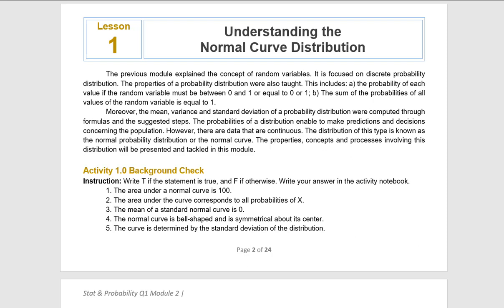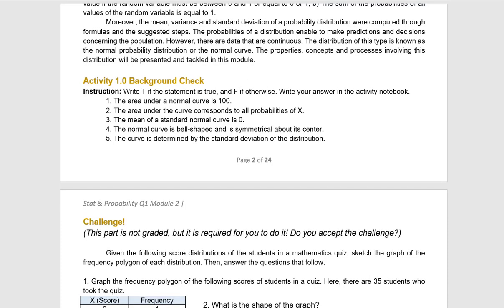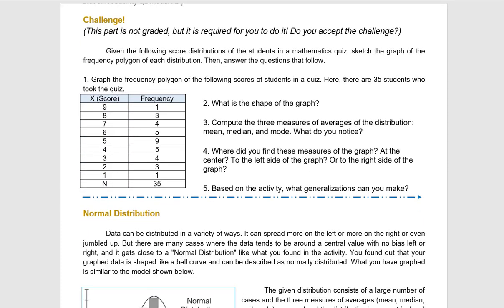Lesson 1: Understanding the Normal Curve Distribution. Last time, we were talking about the concept of random variables and we even solved for the mean and variance of discrete probability distribution. However, it's not always the case, because some data are continuous. The distribution of this type is known as the normal probability distribution, or the normal curve. So we are going to tackle the properties, concepts, and other processes involving the normal distribution.